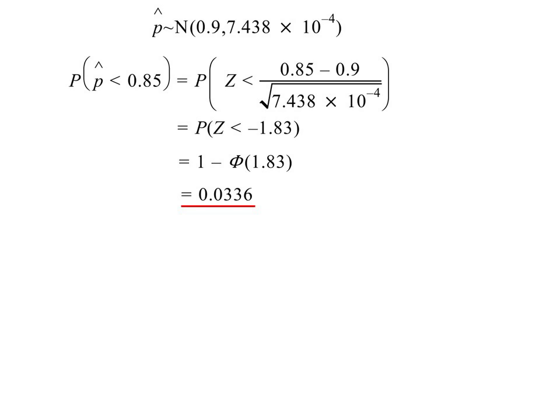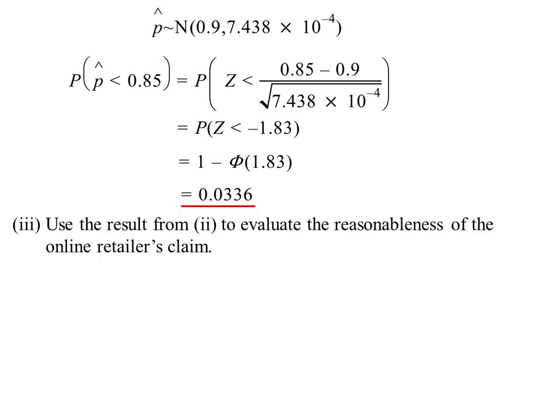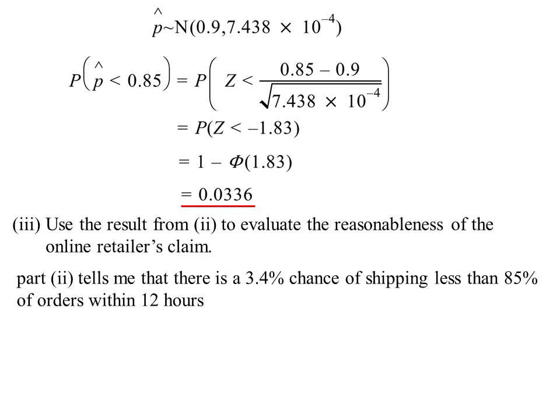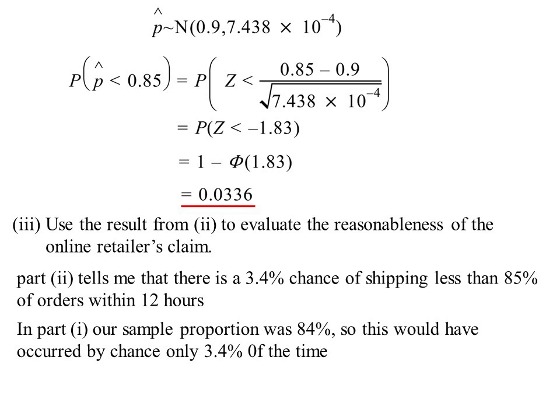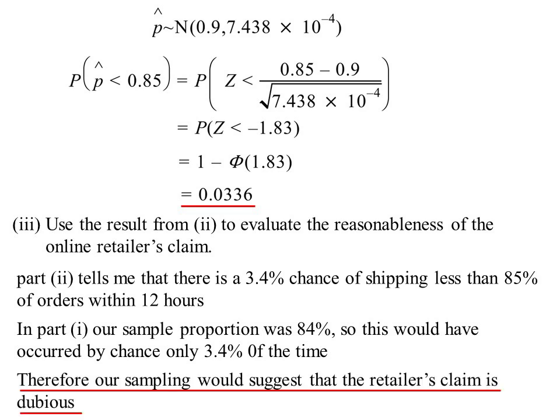So using the result from two, evaluate the reasonableness of the online retailer's claim. Well, part two is telling me there's a 3.4% chance of shipping less than 85%, that there's only a 3.4% chance of that happening. In our sample proportion, it only occurred by chance 3.4% of the time. Well, if it's only occurring by chance 3% of the time, then no, the retailer's claim is not good, because we're saying the majority of the time that happens. There's only a very small chance that that happened by chance.